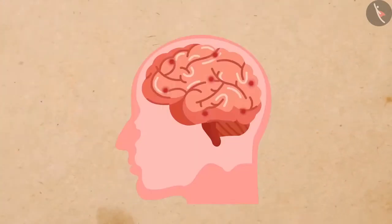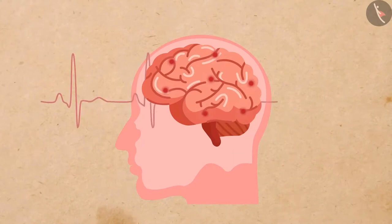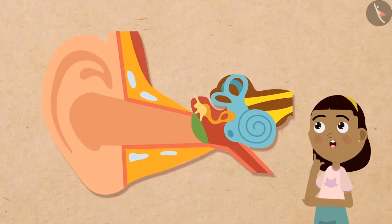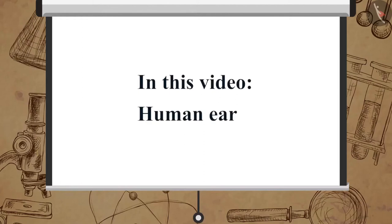These electrical signals are sent to the brain through the auditory nerve, and the brain interprets them as sound. This is how human beings are able to perceive the sound around them. In this video we learned about the human ear.